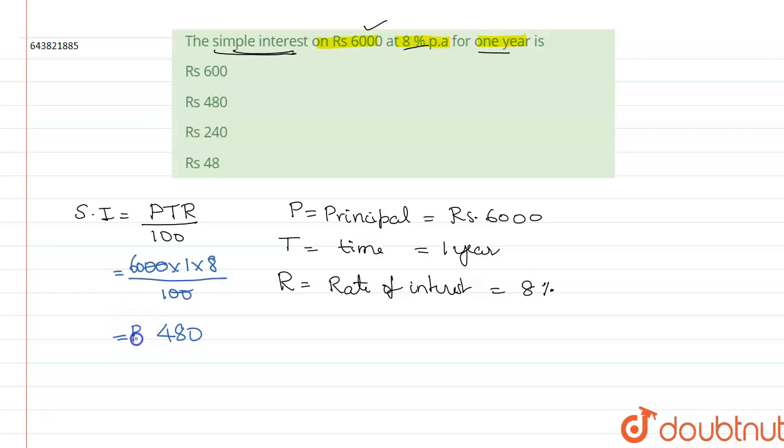Therefore, Rs. 480 is the simple interest on Rs. 6000 principal, 8% per annum for 1 year. So, the second option is the correct answer.